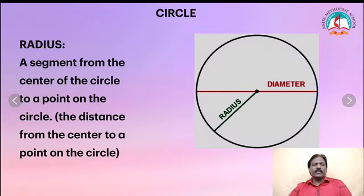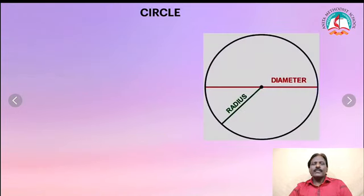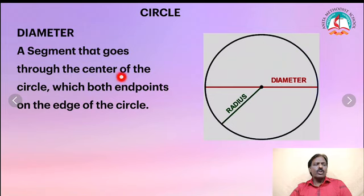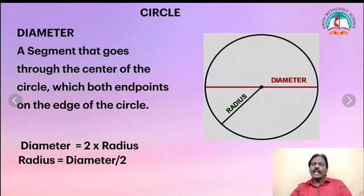Now, in a circle, what is radius? A segment from the center of the circle to a point on the circle. That means, the distance from the center to a point on the circle is called radius. Now, what is diameter? A segment that goes through the center of the circle with both end points on the edge of the circle - that is called diameter. So, diameter is equal to 2 into radius, and radius is equal to diameter divided by 2.